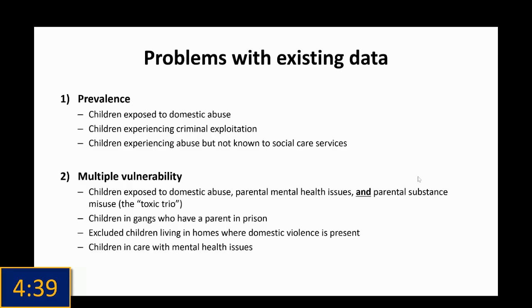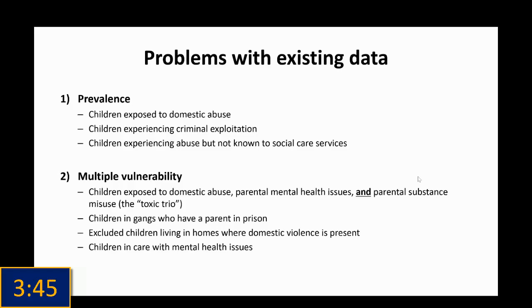The other issue is that even when we can get a good measure of a particular vulnerability, we're often interested in multiple vulnerabilities — children exposed to two or more types, or three or more types. That's when things really start to fall apart in terms of what we can say and estimate. A good example is children exposed to domestic abuse within the household with parents who have a mental health issue and substance abuse — in social policy that's called 'toxic trio', and it's very difficult to estimate because it's three individually difficult things. For instance, we can't answer how many children are excluded from school and come from a household where domestic violence was an issue — it involves two separate answers that live in different data sets.